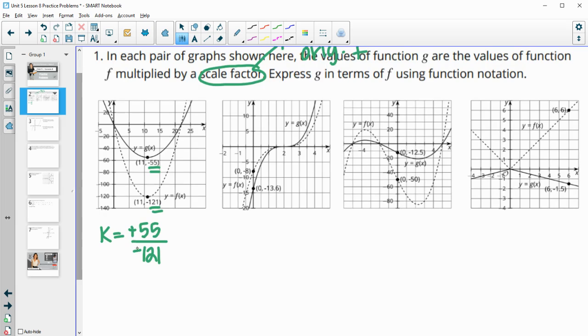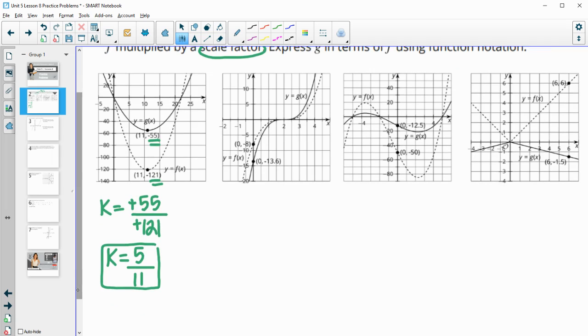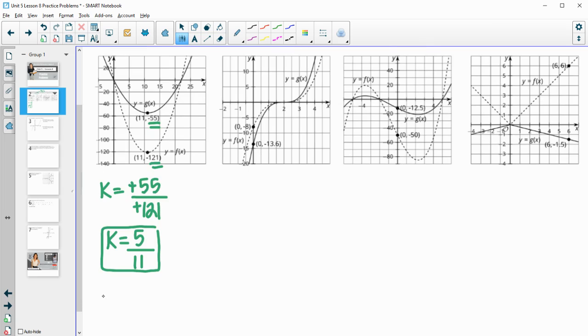And then we can simplify this. So negative over negative is positive, 55 divided by 11 is 5, and 121 divided by 11 is 11. So that scale factor is 5/11ths. So you could say that g of x equals 5/11ths the height of f of x.